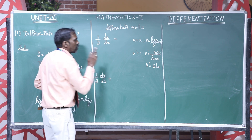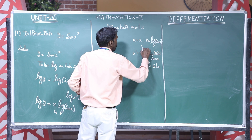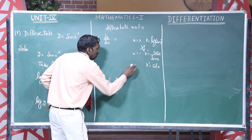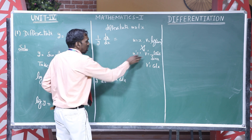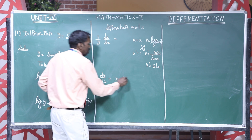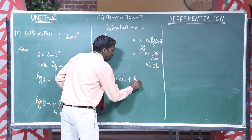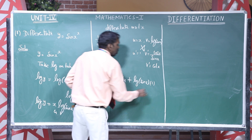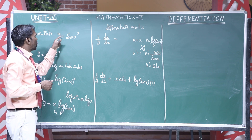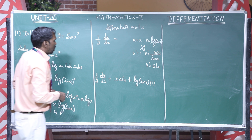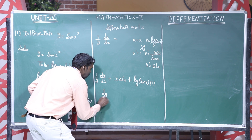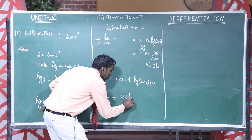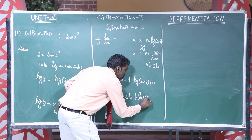Applying u v dash plus v u dash: u v dash gives x into cot x, and v u dash gives log sin x into 1. So the right-hand side becomes x cot x plus log sin x. Therefore: 1 by y into dy by dx equal to x cot x plus log of sin x.